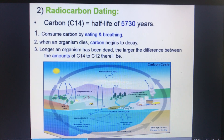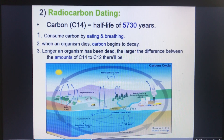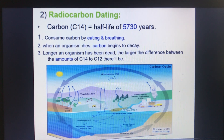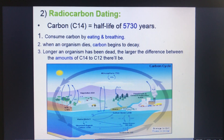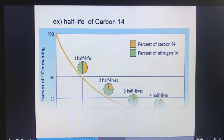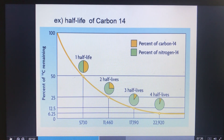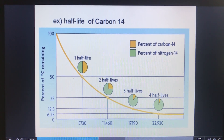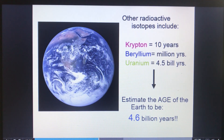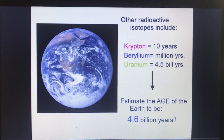Radiocarbon dating uses carbon-14, which is an isotope with a half-life of 5,730 years. We consume carbon by eating and breathing, and when we die, carbon begins to decay. As the half-life breaks in half again and again, we can estimate the age of bones up to thousands and thousands of years. Other radioactive isotopes include krypton, beryllium, and uranium.